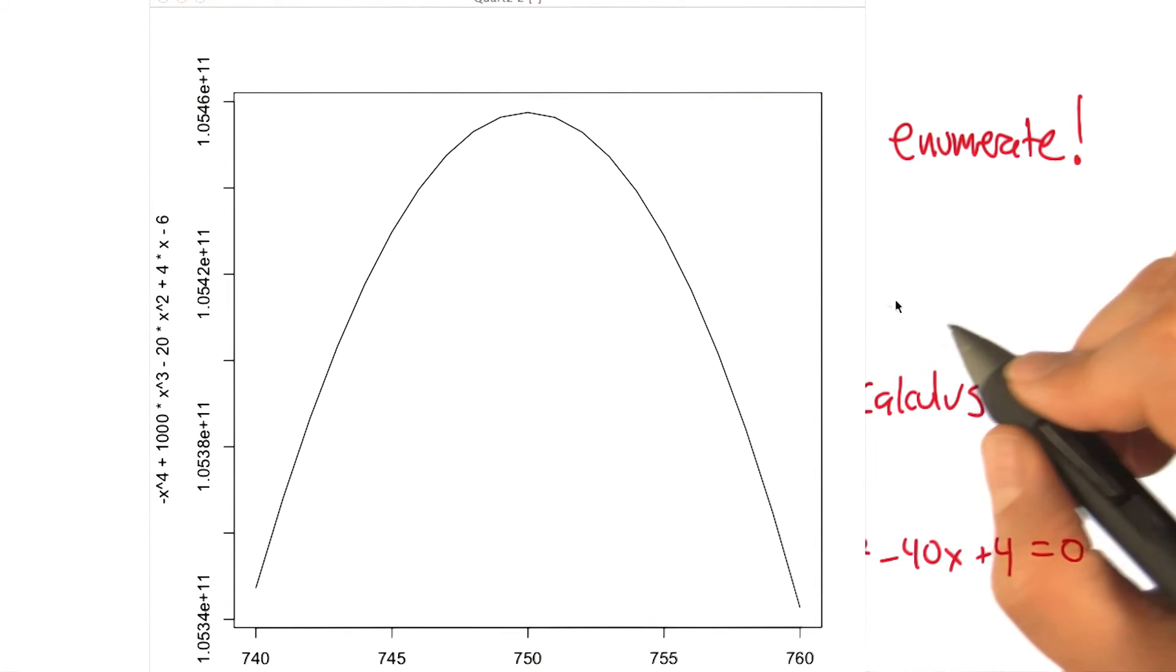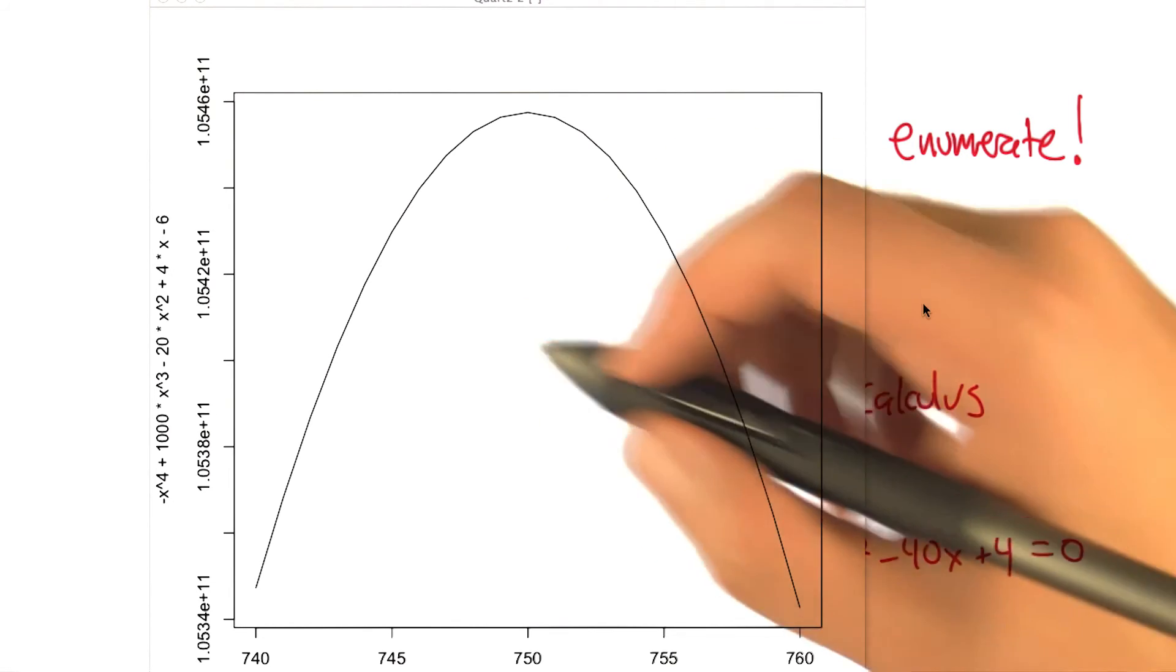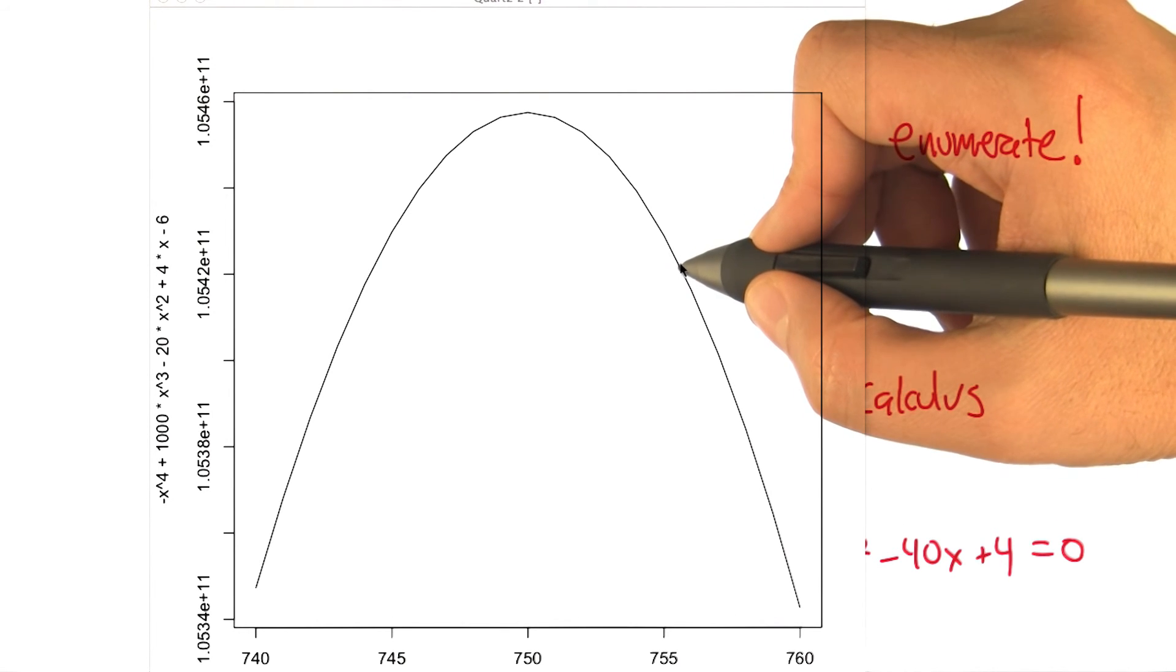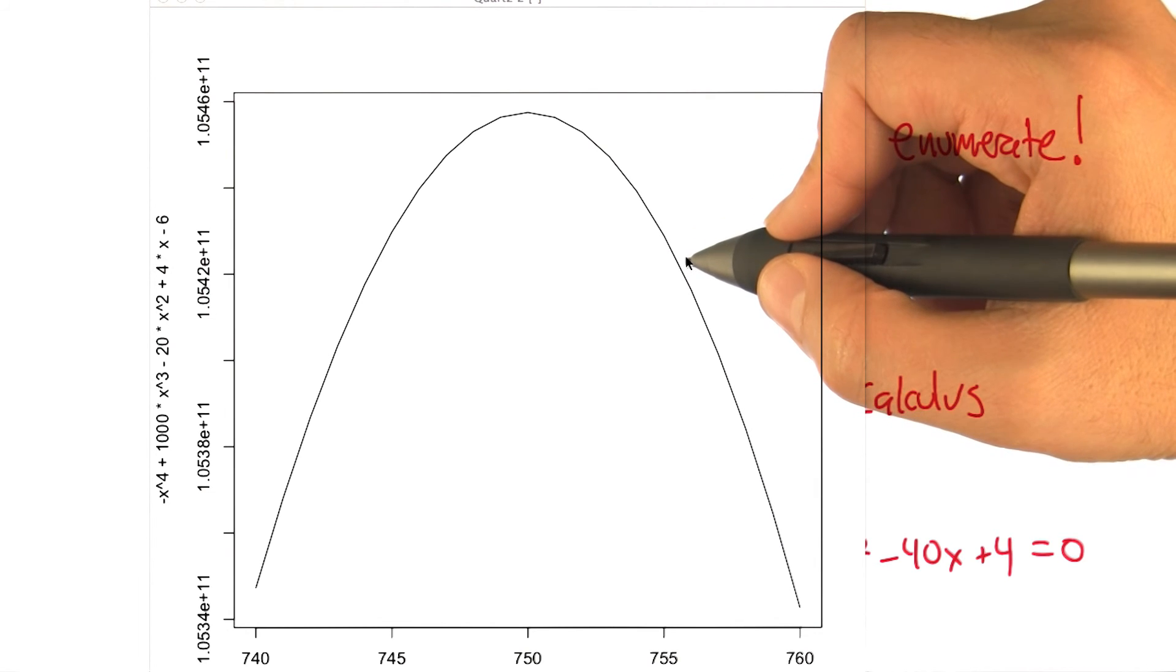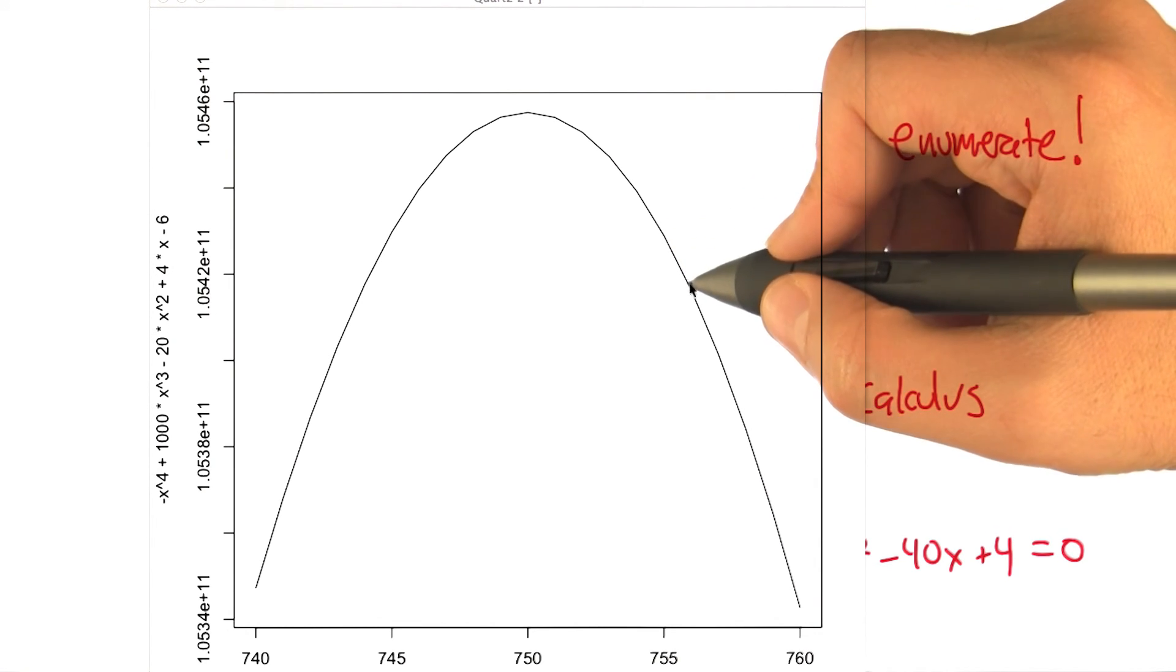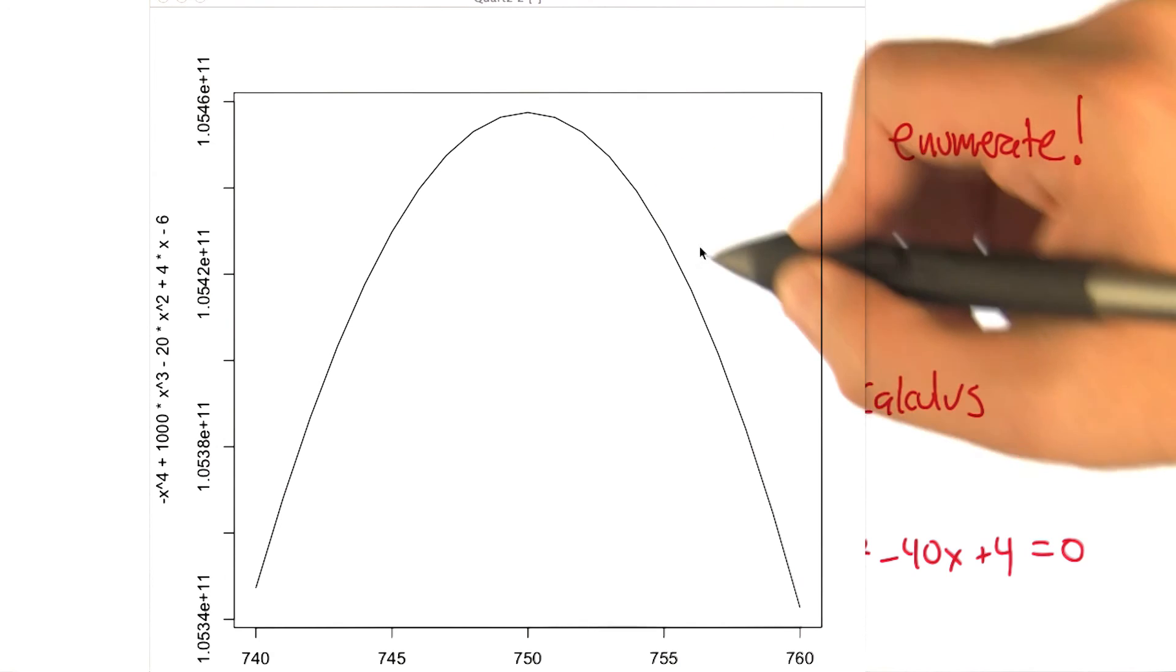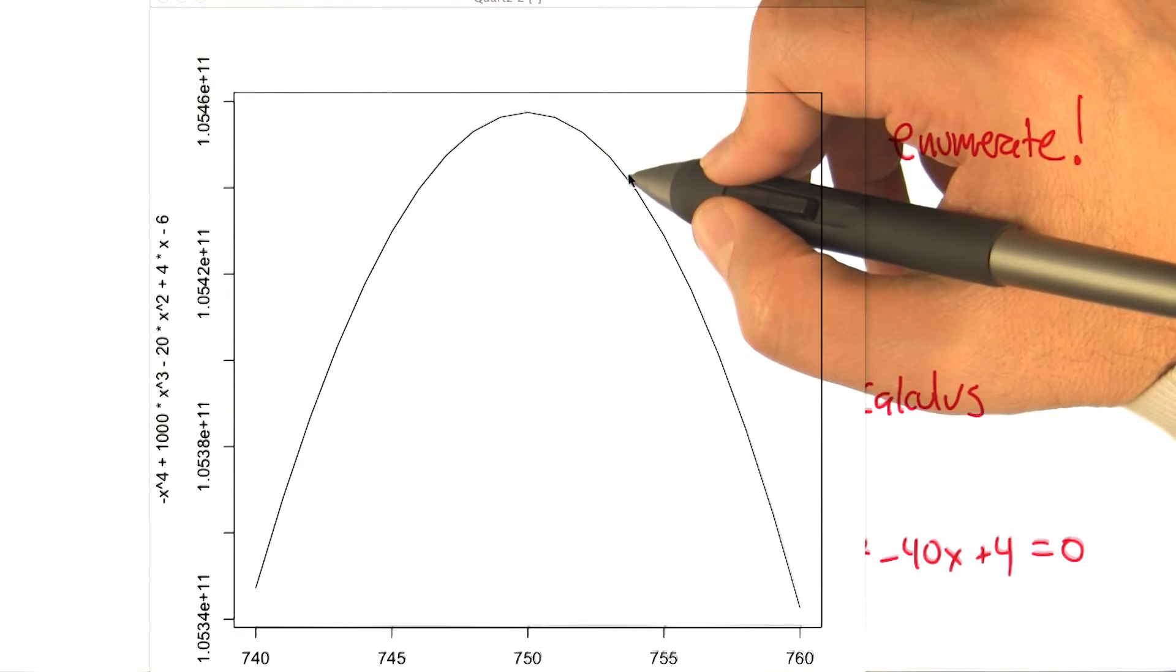We could also use something called Newton's method. Do you know Newton's method? I remember it. Newton's method says let's guess a position, like 755, and use the derivative at that point, which is actually really easy to compute. It doesn't involve solving the cubic. It just involves writing down the cubic and evaluating at that point. We can actually fit what the straight line is here. And we can take steps in the direction of that line. It's a gradient ascent kind of method.